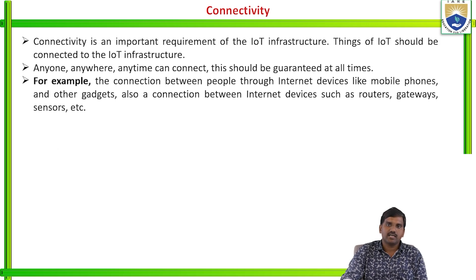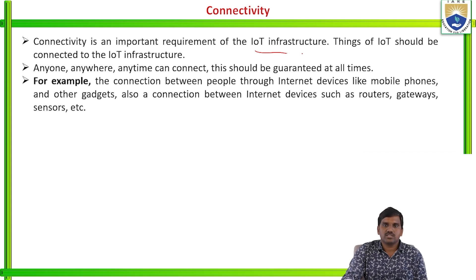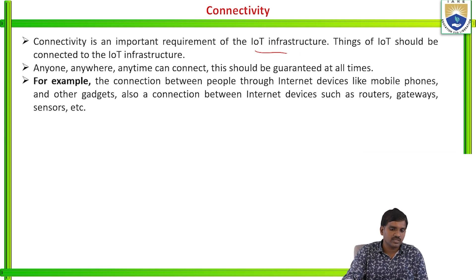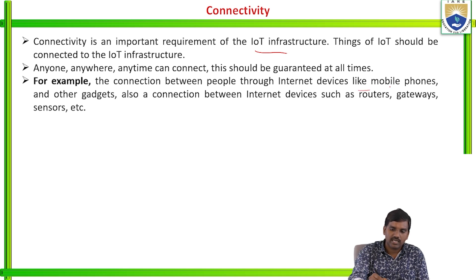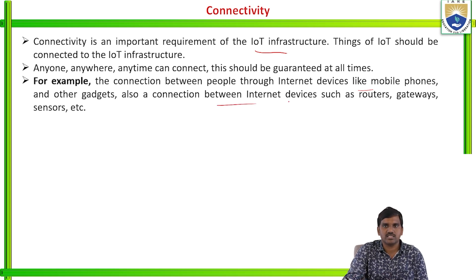Connectivity: you can connect devices to the network — that is the basic thing in IoT. An important requirement of the IoT infrastructure is that things should be connected to the IoT infrastructure. For example, the connection between people through internet devices like mobile phones, and other connections between internet devices such as routers, gateways and sensors.